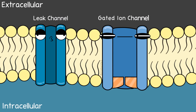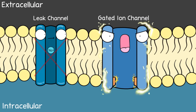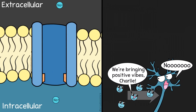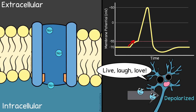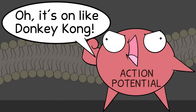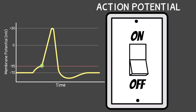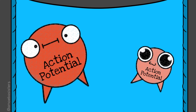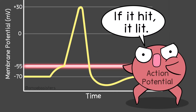An action potential requires gated sodium channels to open — not leak channels, but gated ion channels that allow sodium to rush in. Sodium ions have a positive charge, so their entry makes the cell more positive, depolarizing it. If and only if the membrane potential reaches a threshold level — about negative 55 millivolts — an action potential is triggered. This is all-or-nothing: hit the threshold and it starts; don't reach it and it doesn't. There are no partial, small, or large action potentials — if triggered, you always get the same action potential.